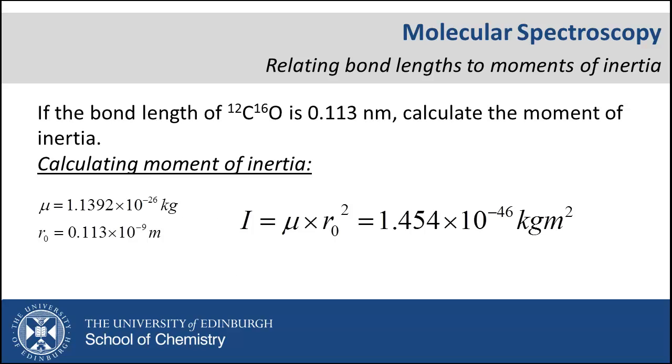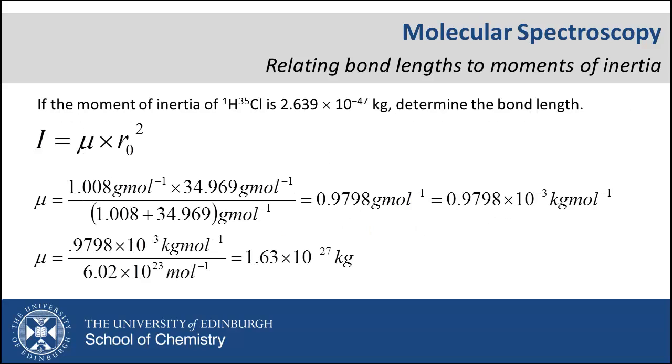What about the other way around? Here we are given the moment of inertia for HCl and wish to calculate the bond length. In this example I am going to calculate the reduced mass in a different way, calculating the reduced mass firstly in grams per mole and then converting to kilograms. Either approach shown gives us the same result.